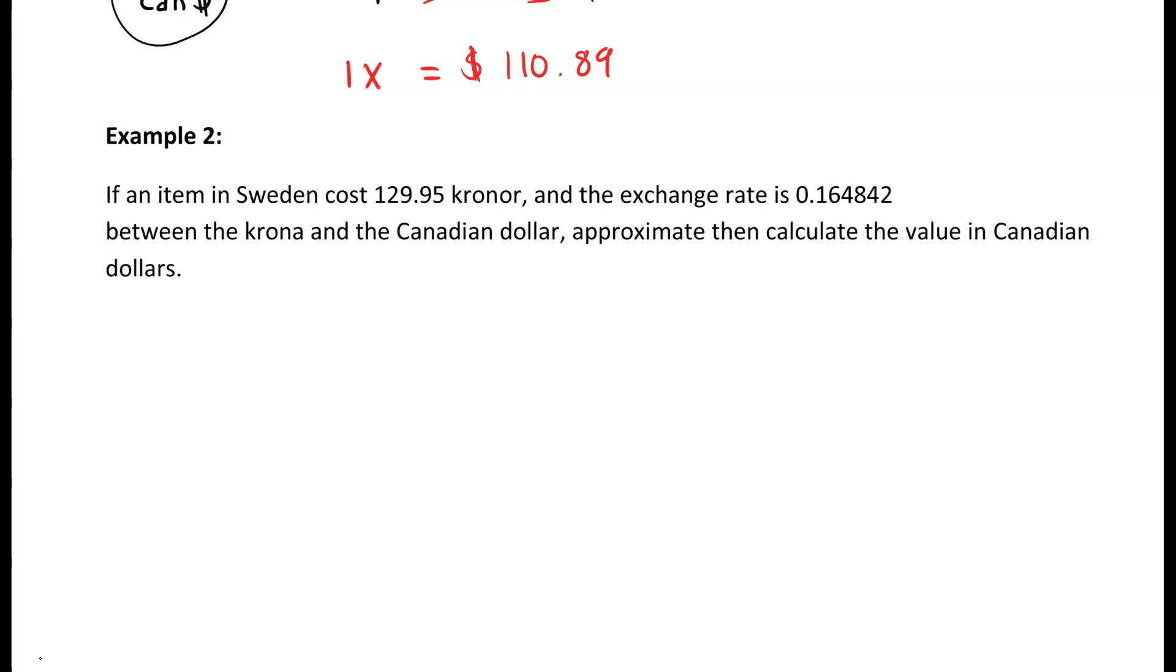The first thing that we need to look at is we have krone and we also have Canadian dollars. So set up your fraction so you can keep track of what's going on top and what's going on the bottom. The next thing we need to do is write down the dollar amount of what we have.